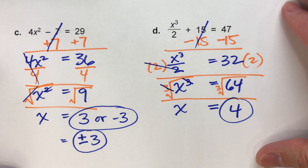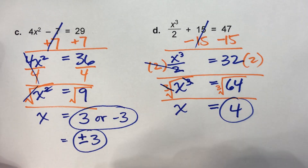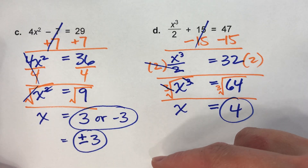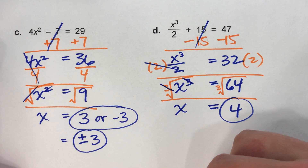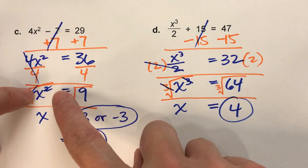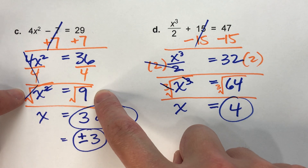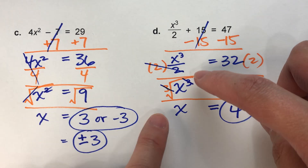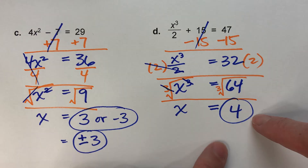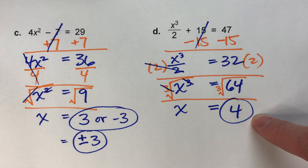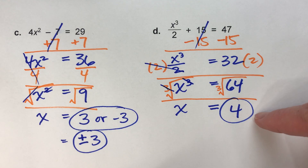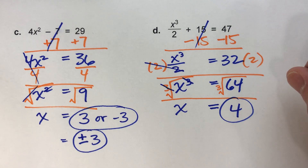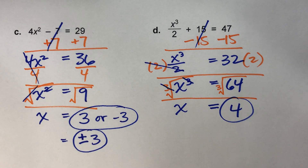As you work through these, work carefully and undo in the opposite order of the order of operations. When you undo x squared there are two possible answers — a positive and a negative. When you undo x cubed there's only one answer. Hopefully you found this video helpful. If you did, please hit the like button and subscribe. Good luck in your math, and I will see you next time.